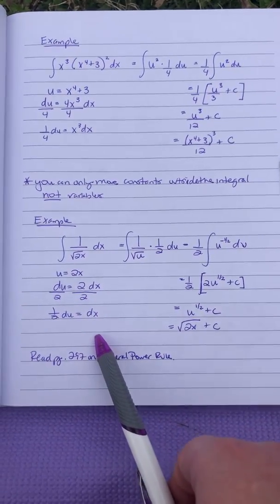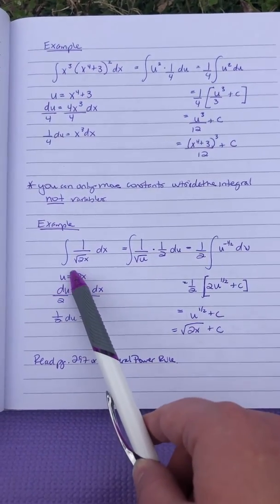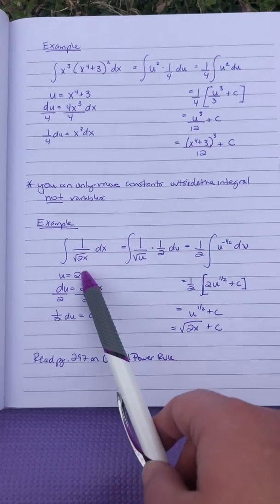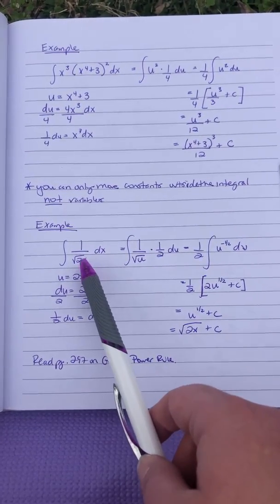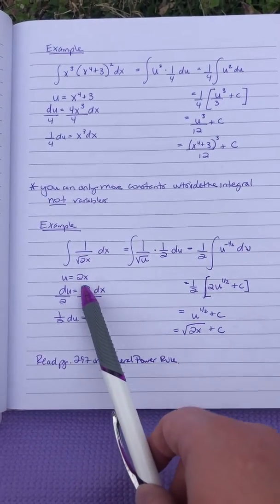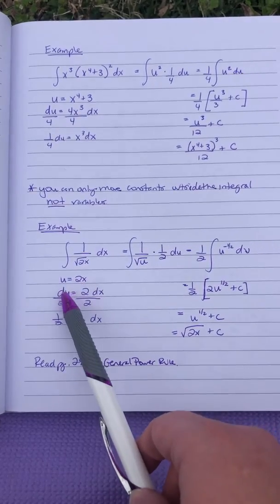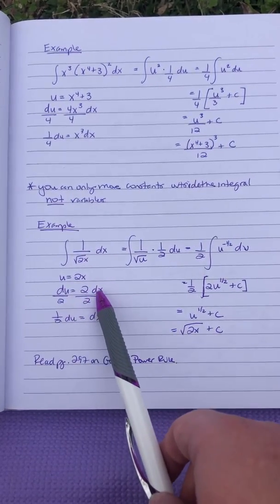Okay, now let's look at what happens with this one. So if we take the antiderivative of 1 over the square root of 2x. Well, the innermost thing here is the 2x. That's going to be my u. If you take the derivative of that, you get 2 dx.